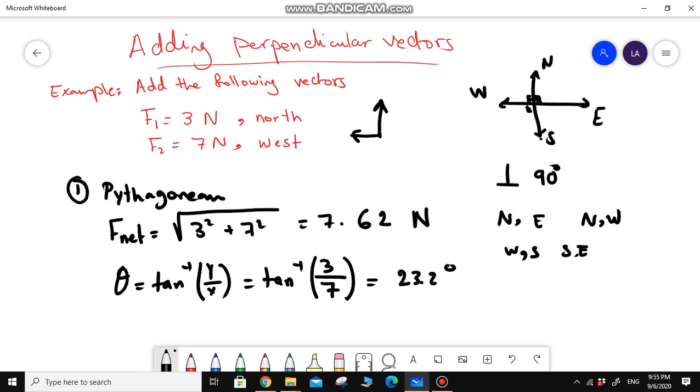Now, this angle is not from the X axis. To find the angle from the positive X axis, you need to use the quadrant rule. Since we are between the north and the west, we will be in the second quadrant.